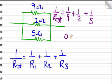1 ninth is 0.1 repeating, 1 half is 0.5, and 1 fifth is 2 tenths. If I add those up, I get 0.811 repeating. But that equals 1 divided by R total.